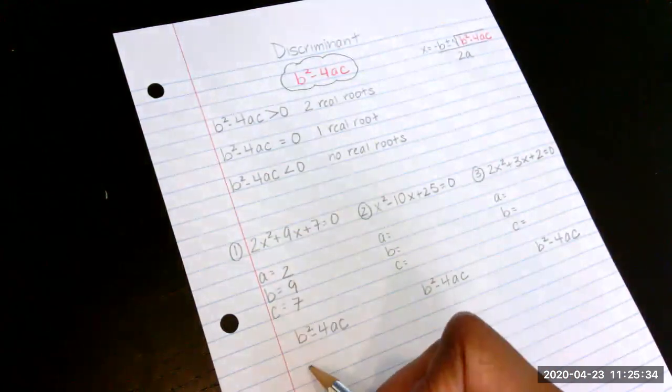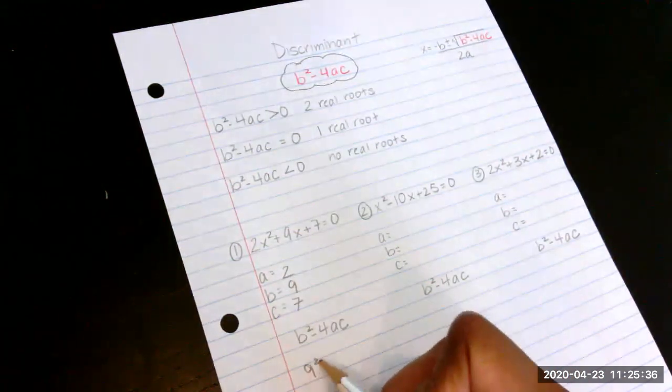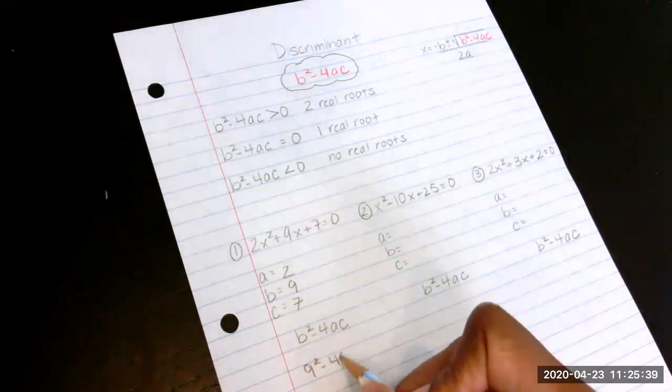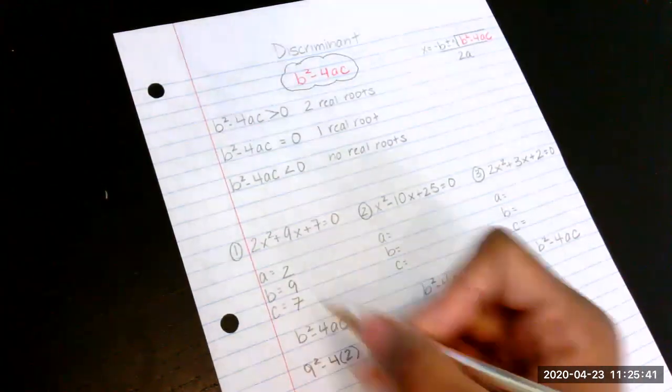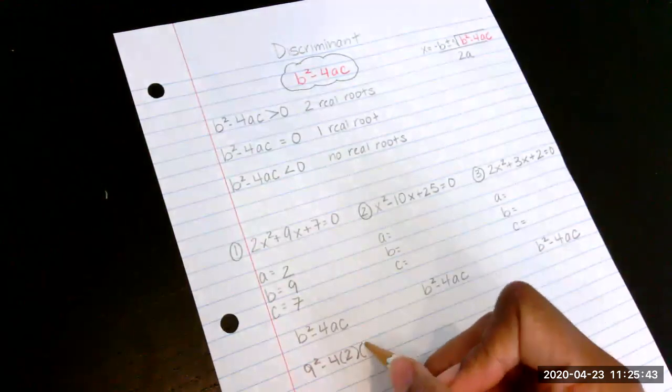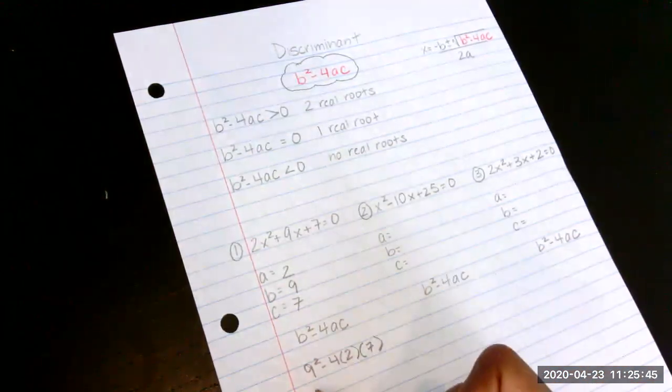So now all I'm doing is plug it in into the discriminant formula. So b is 9, so we're going to do 9 squared minus 4. In this case, our a is 2. In this case, our c is 7.